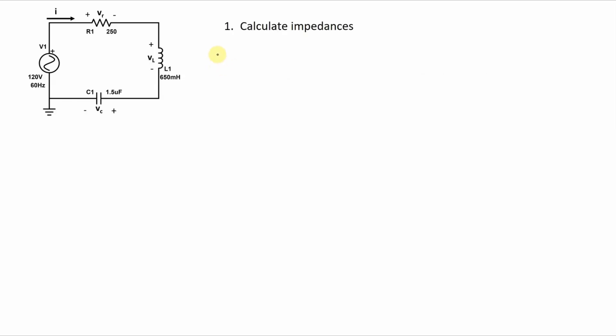Here we go for calculating the impedances. The impedance for the resistor — that's an easy one. We don't have to do any calculation for that. It's 250 ohms with a phase angle of 0 degrees.